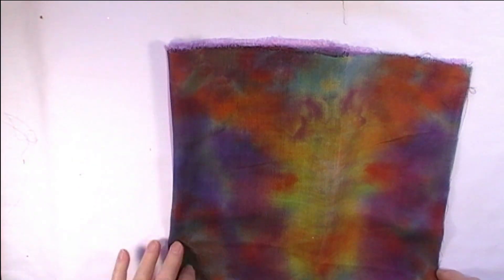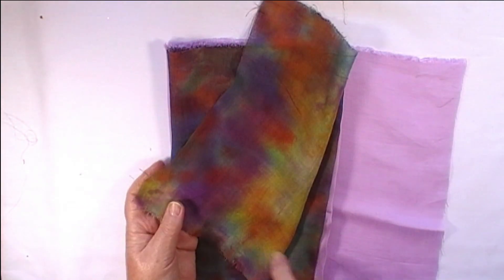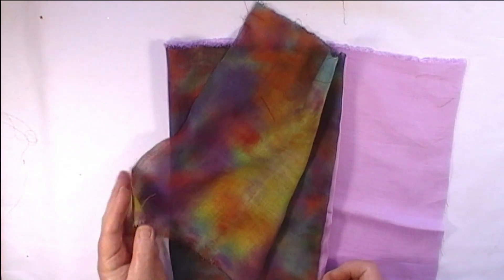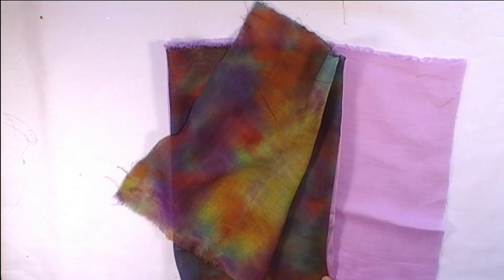So what we have is one layer, this layer that's got the seam at the top that's been folded the right way and then the lining underneath.